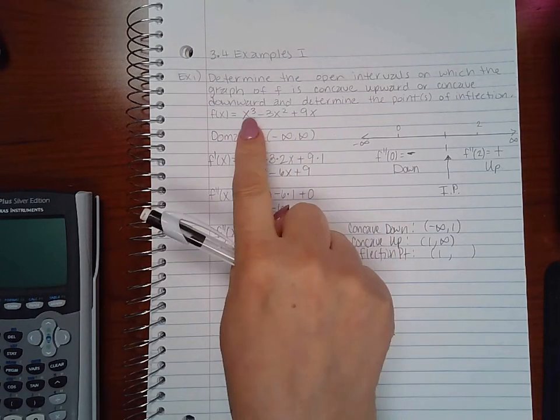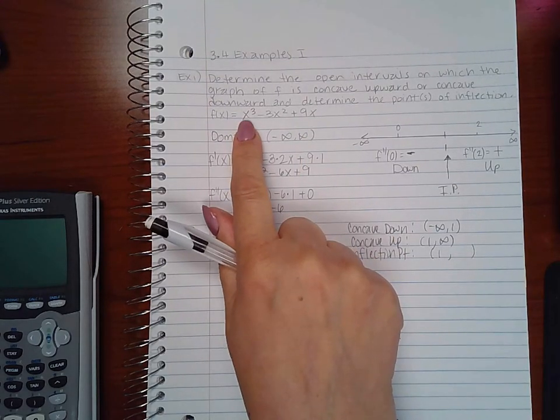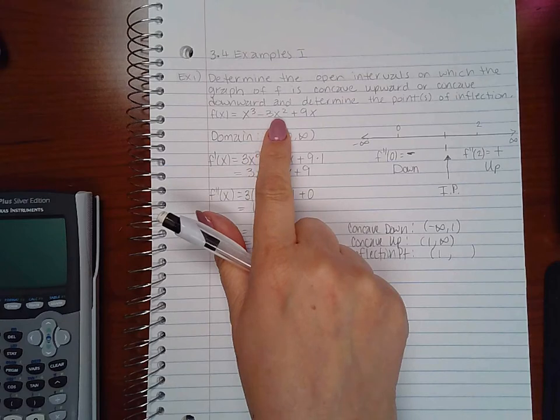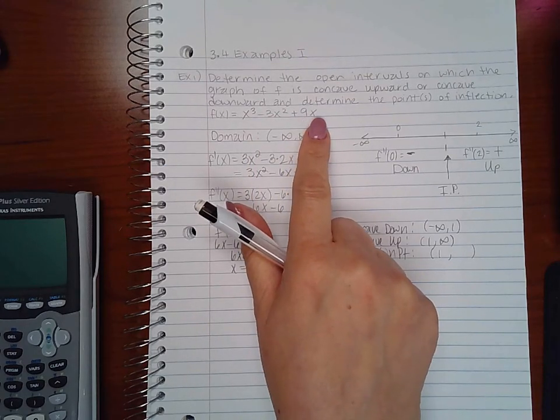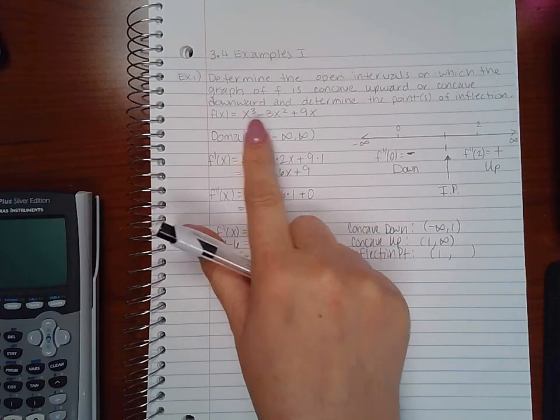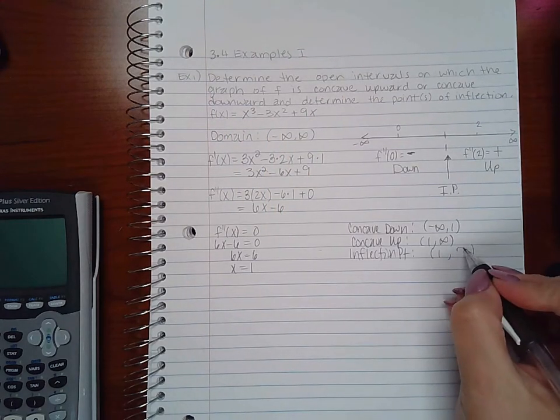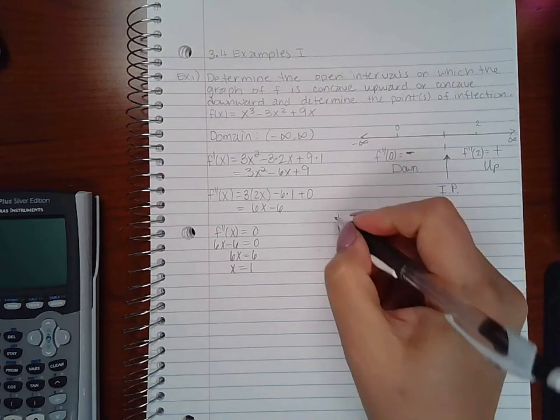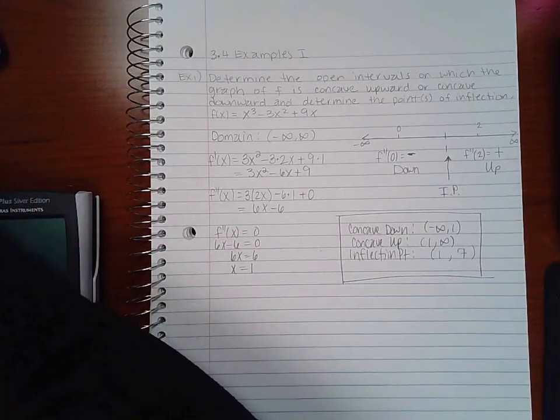In order to find out that y value: 1 cubed is 1 minus 3 times 1 squared is minus 3, and then plus 9 times 1 is 9. So 1 minus 3 is negative 2 plus 9 is 7. And so this is the answer for this problem.